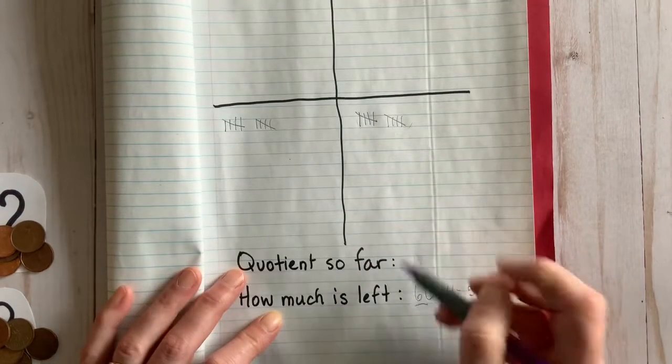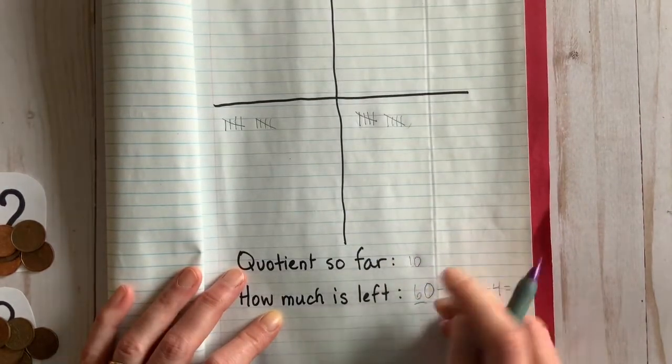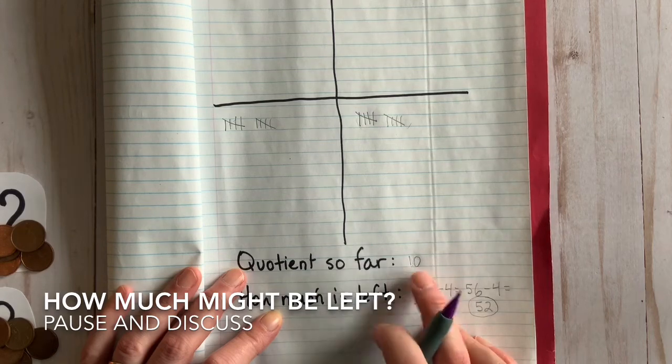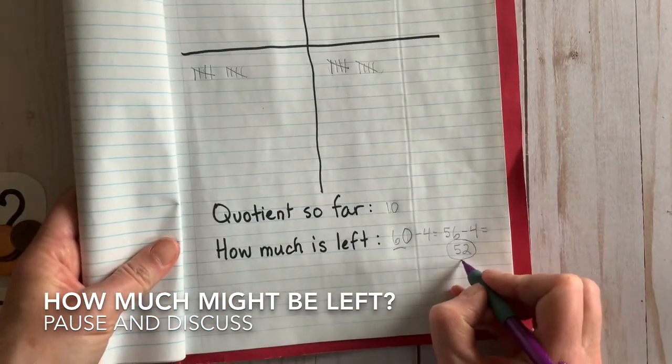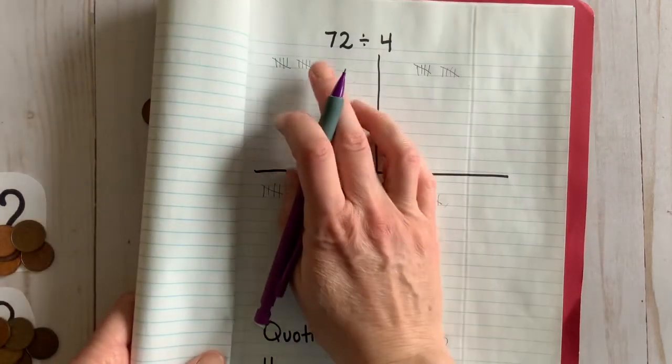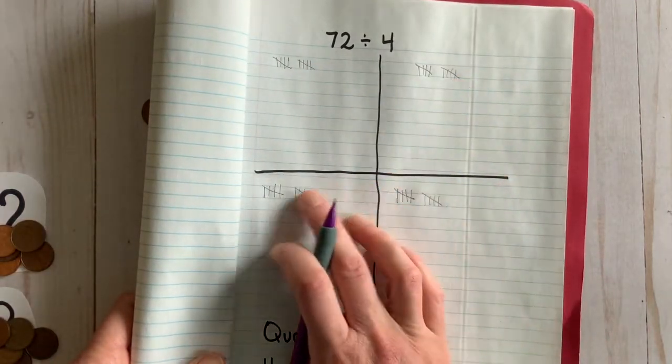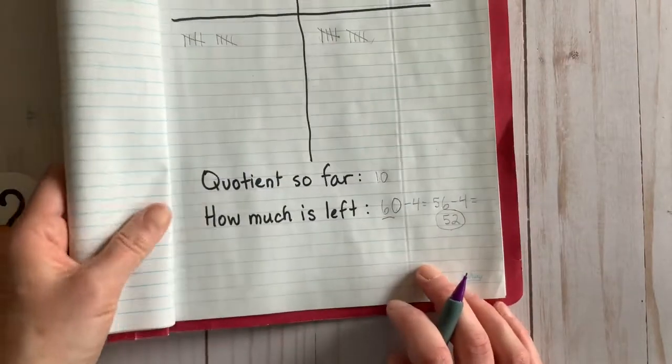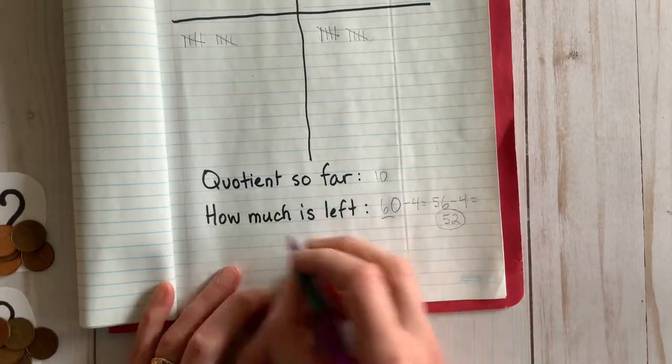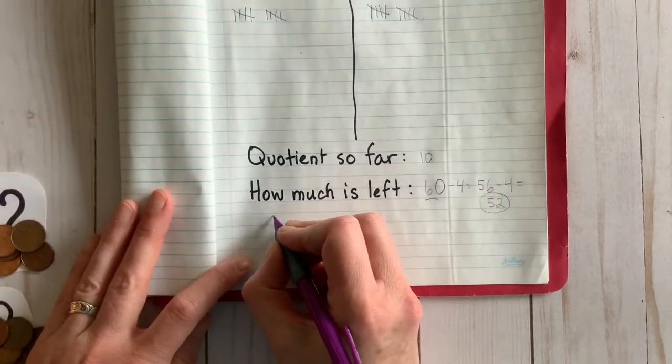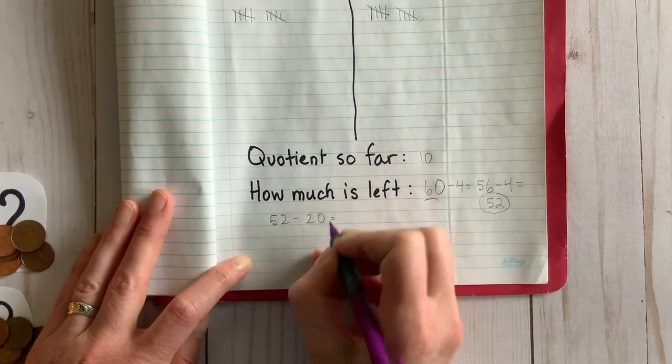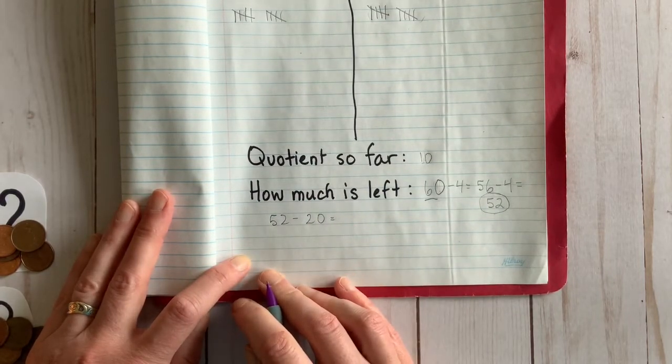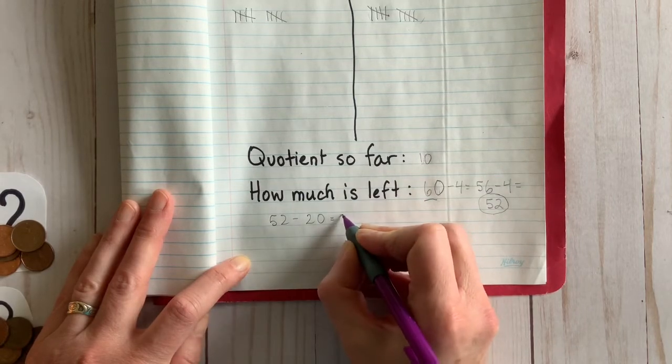We could do this faster. Let's share out five at a time. Our quotient so far is 10. How much of the dividend is left? Pause and discuss what you think. Okay, we just used four groups of five. That's four times five is 20, right? So now we have 32 left to divide.